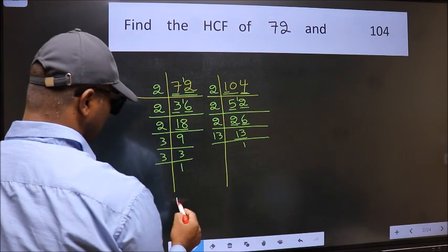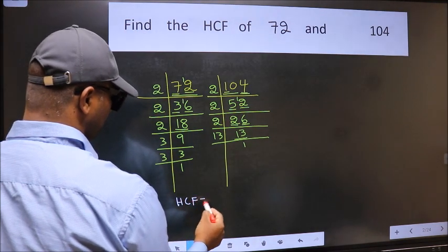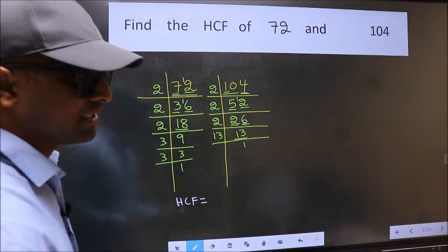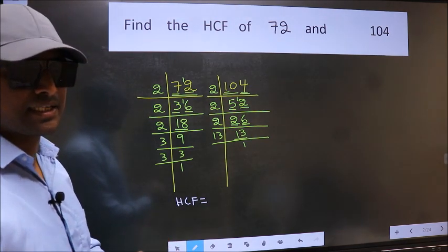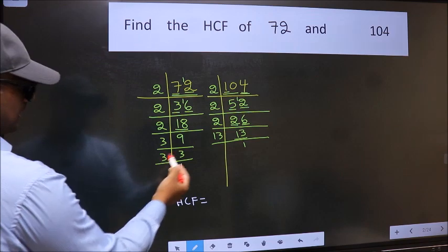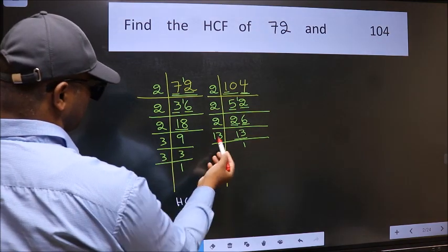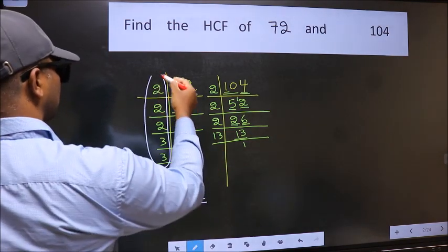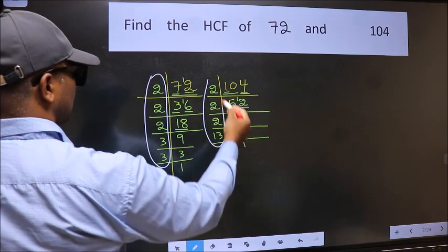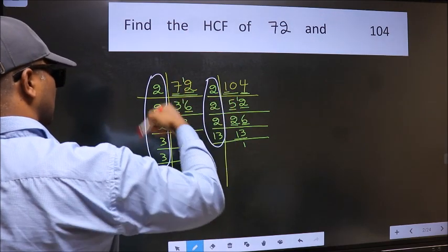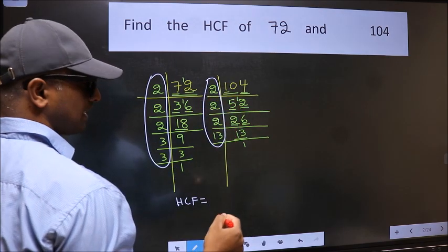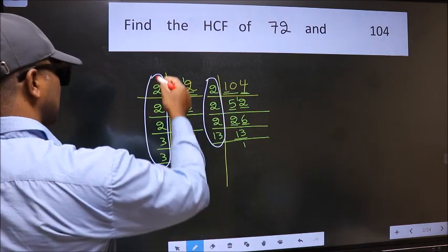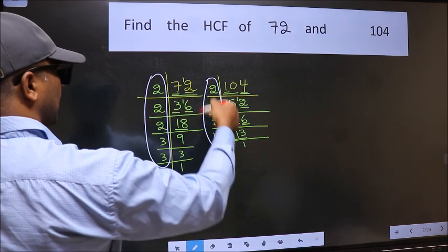Therefore, our HCF is the product of the numbers which should be present in these 2 places. That is here and also here. Here and here. So now let us find the numbers which should be present here and here.